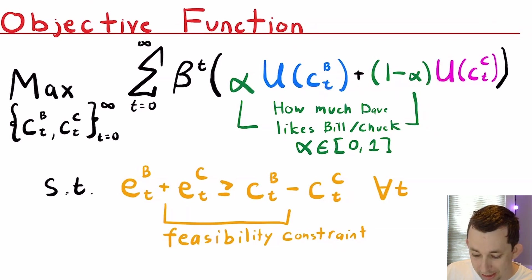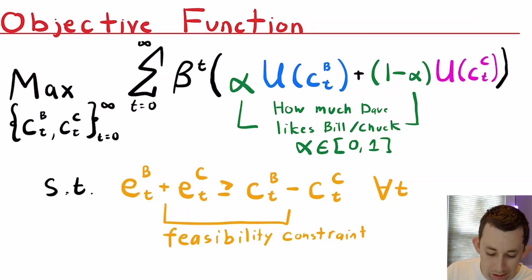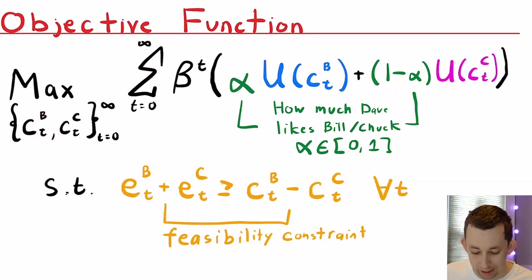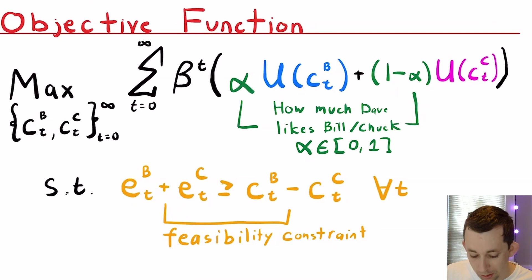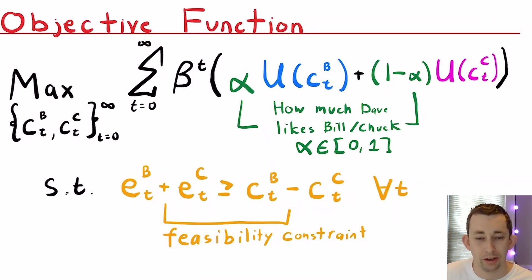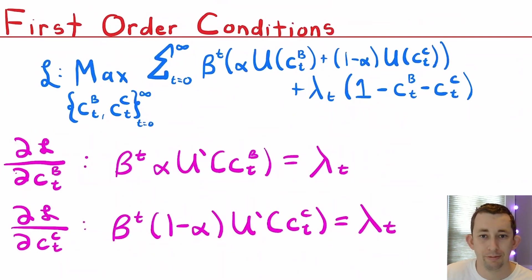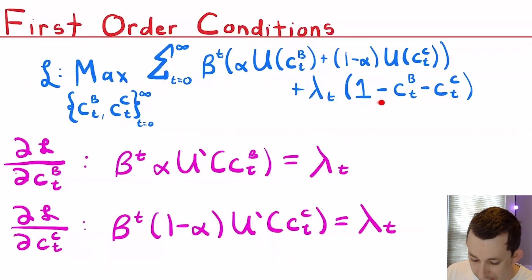So we have beta^t times utility, summing from t equals zero to infinity. We get to choose how much Bill and Chuckles consume in each period. For the feasibility constraint, we just need to make sure that the number of coconuts falling from both trees is greater than or equal to the amount of coconuts Dave gives out, and we can divide coconuts as small as we want.